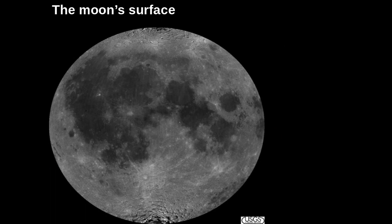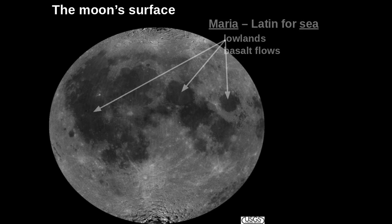If we take a look at the moon's surface, there are a couple of major types of features. When I was a little kid, I would look up at the night sky and see dark spots and lighter areas on the moon. I always thought those dark spots were reflections of the continents from Earth. But the moon is only about one quarter the size of the Earth, so the continent of Africa would cover the whole moon. The dark spots are not continents.